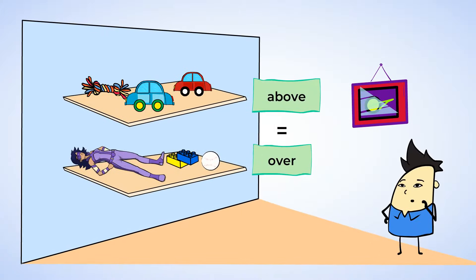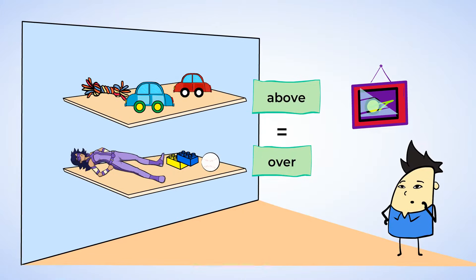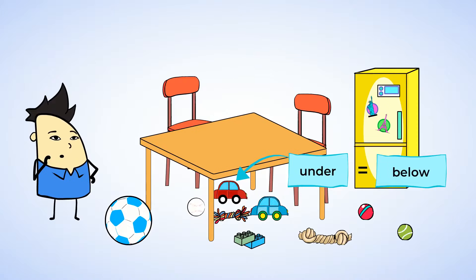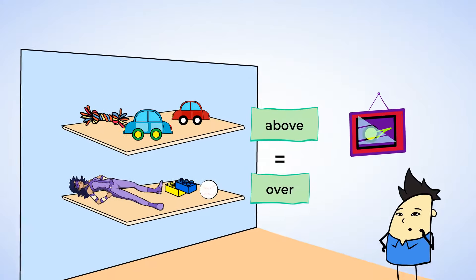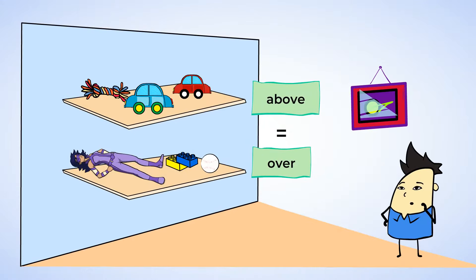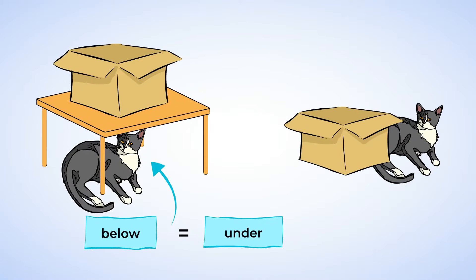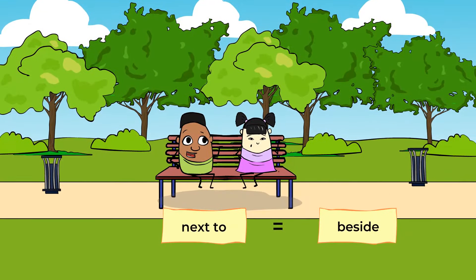Amazing job today! You learned about above, below, and under. Above means higher than or over, and below means lower than or under. And you also learned about beside and next to. These mean two things are side by side.